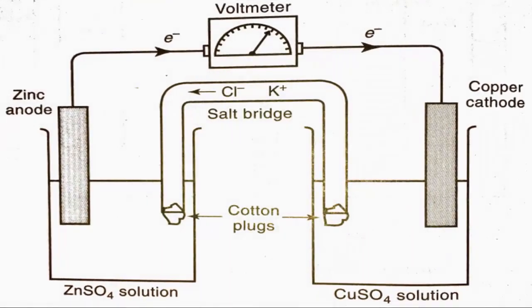This is a basic picture of what a voltaic cell looks like. You have two beakers — one with a zinc sulfate solution and one with a copper sulfate solution. On the left is the anode; on the right is the cathode. At the top, a voltmeter measures the current flowing through the wire, which connects the anode to the cathode. In the middle is a salt bridge, whose purpose is to allow the flow of electrons back into the solution. The zinc anode is placed in zinc solution so it won't react until we want it to, and same idea with the copper.